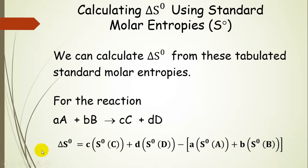For this reaction where lowercase a is the coefficient and reactant A is represented with a capital letter, same with the others. Lowercase b is the coefficient for reactant B. Lowercase c is the coefficient for product C. Lowercase d is the coefficient for product D.